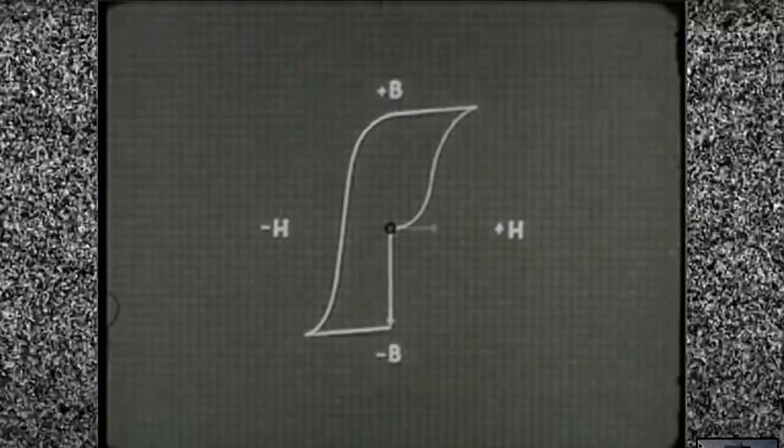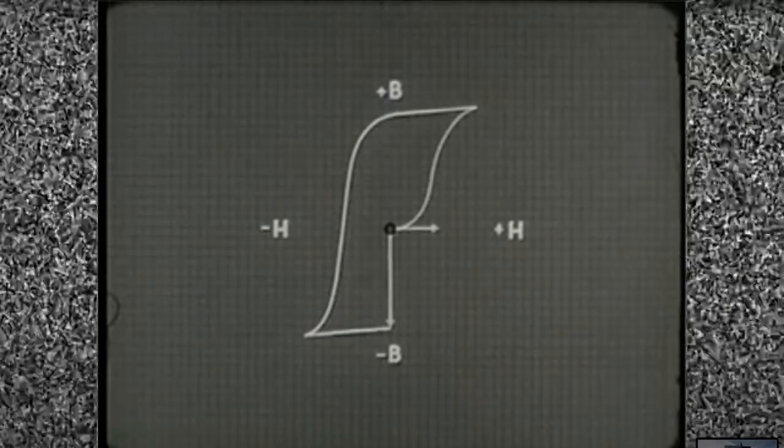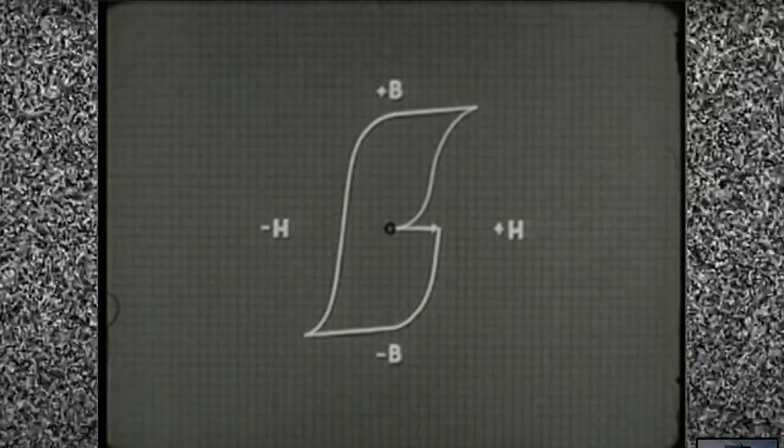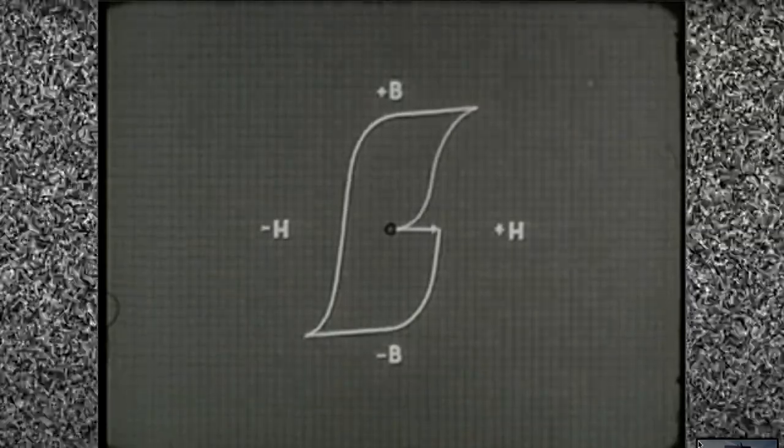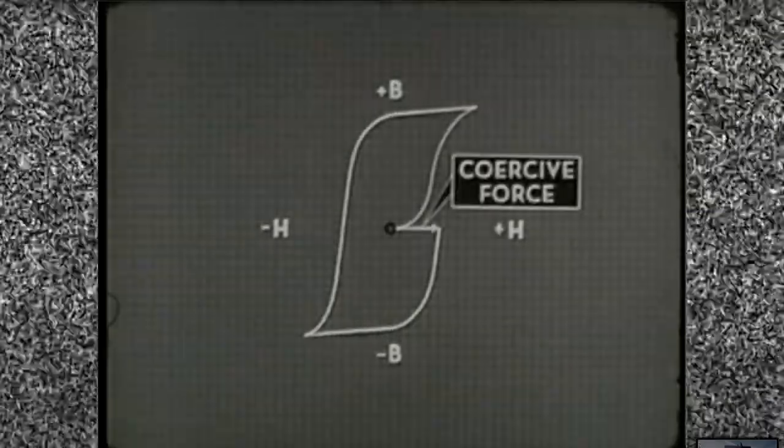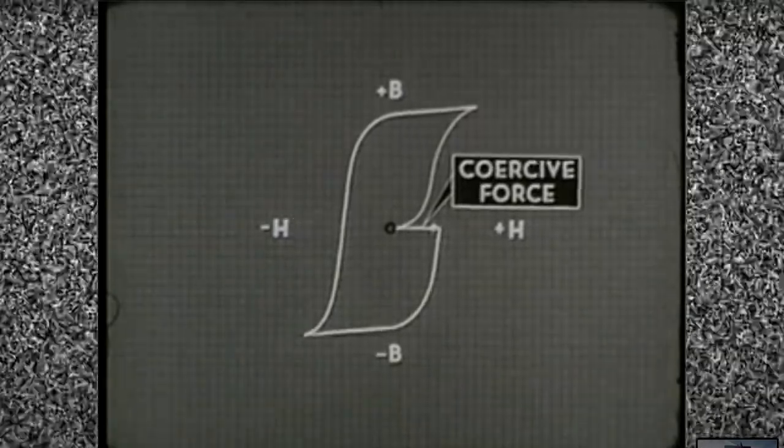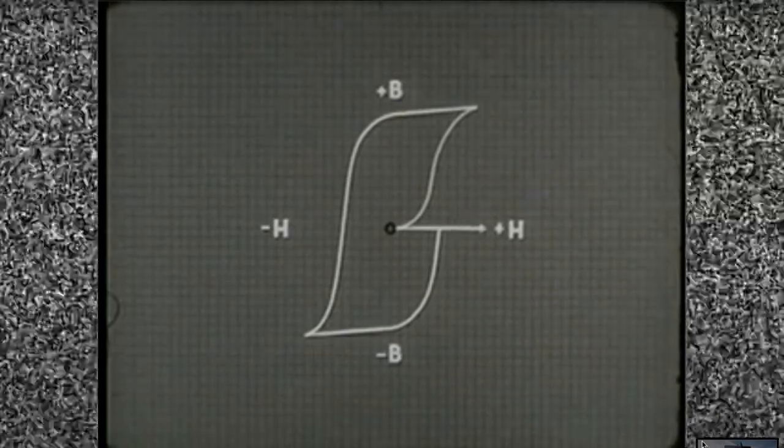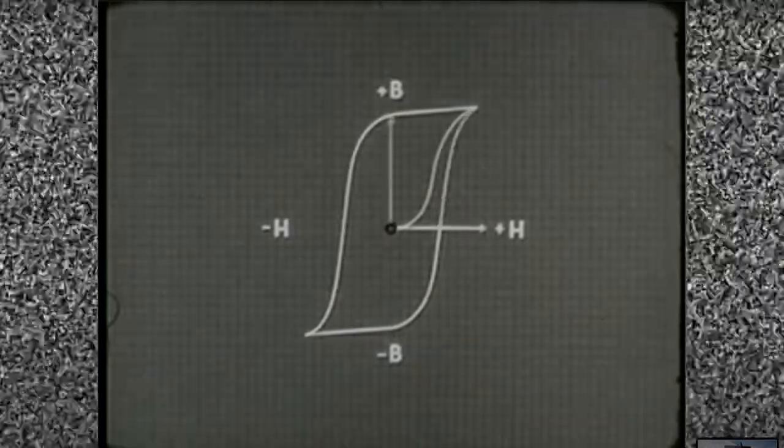To switch the core, we apply a positive magnetizing force. Enough first to cancel out the negative residual magnetism. That is, to act as a coercive force in the opposite direction. And then, by adding more positive magnetizing force, we can bring the core material back to a state of positive saturation.